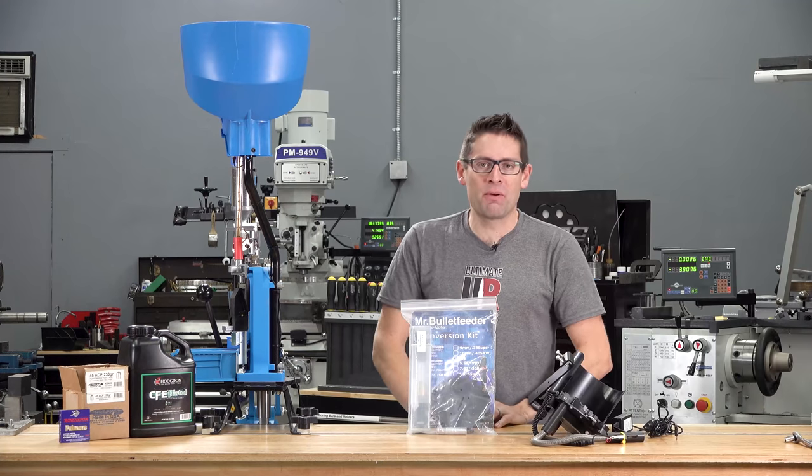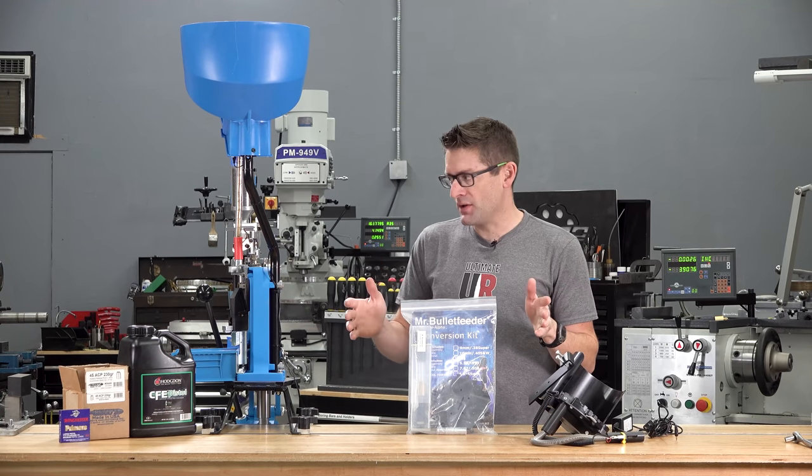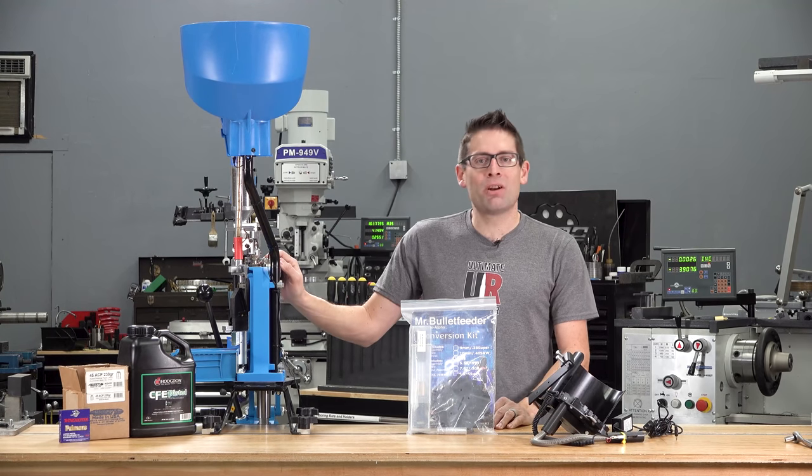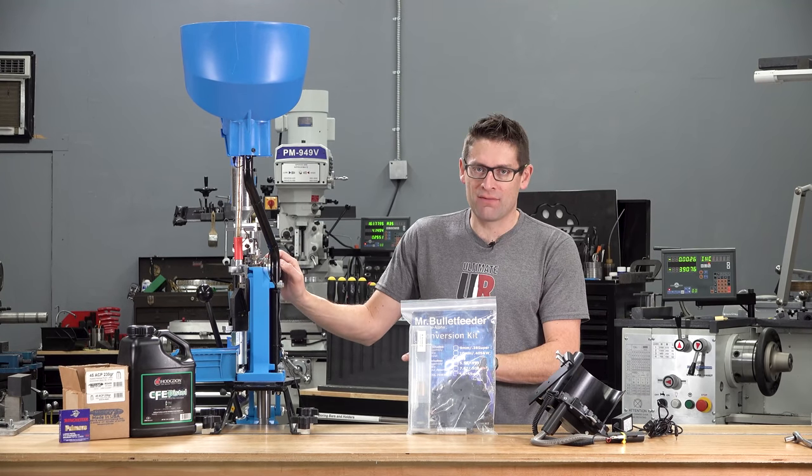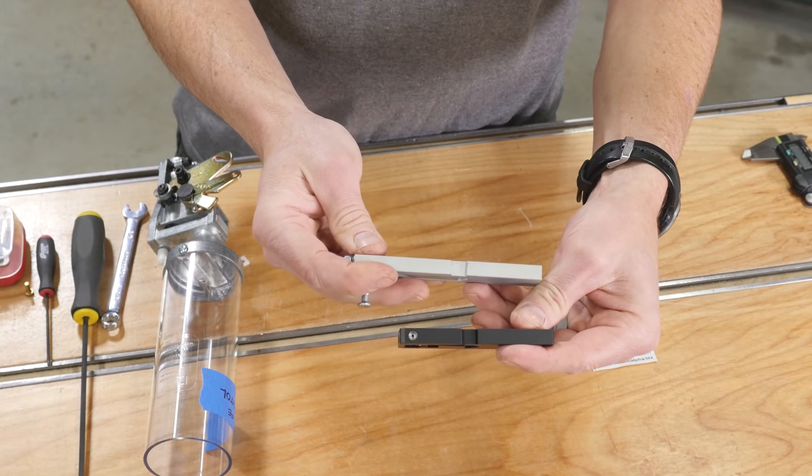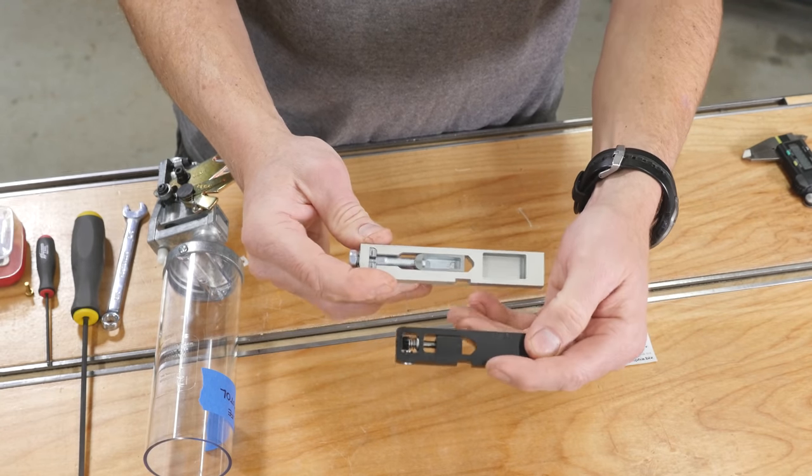Hey there, Gavin Gu here from ultimatereloader.com. This video is actually part two in a two-part series. The first part was focused on solving the issue we have in station number four on the Dillon XL 750. Double Alpha Academy has an extra short powder bar that resolves a clearance issue and I wanted to keep that video contained to that specific product.